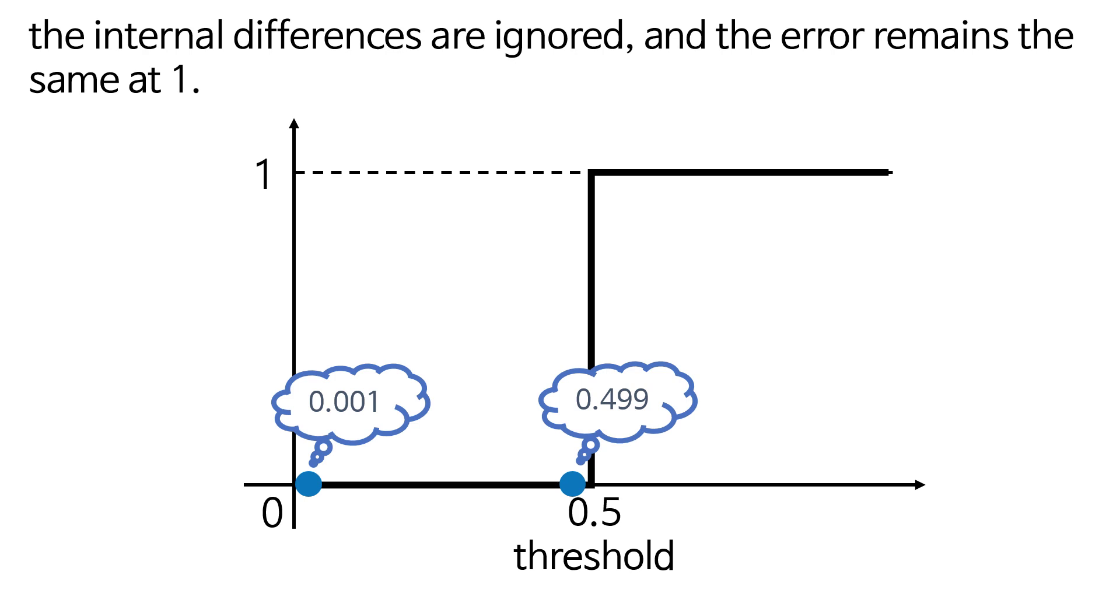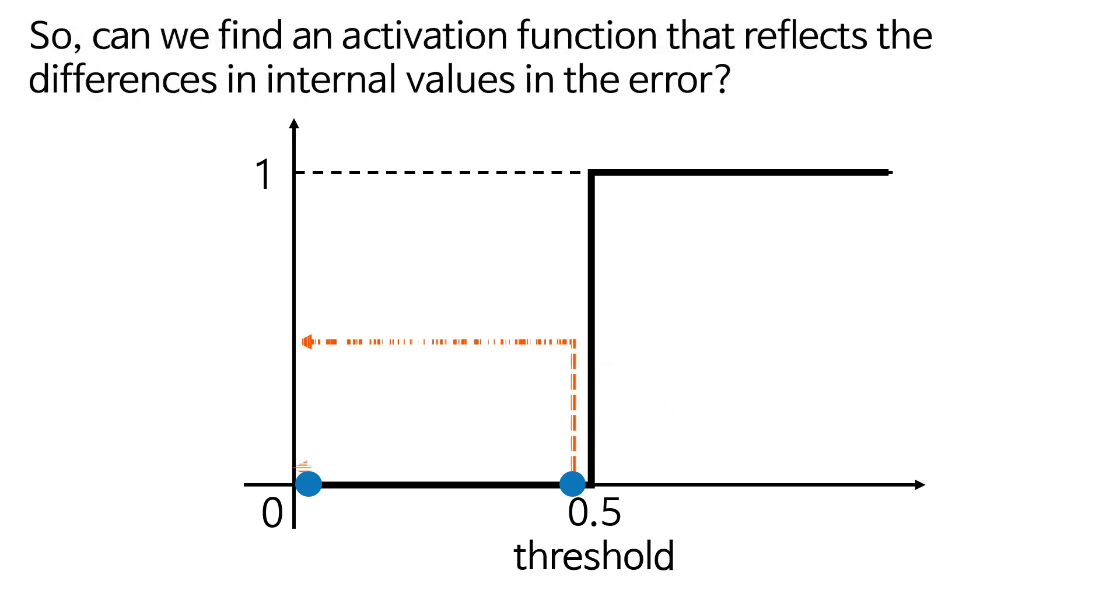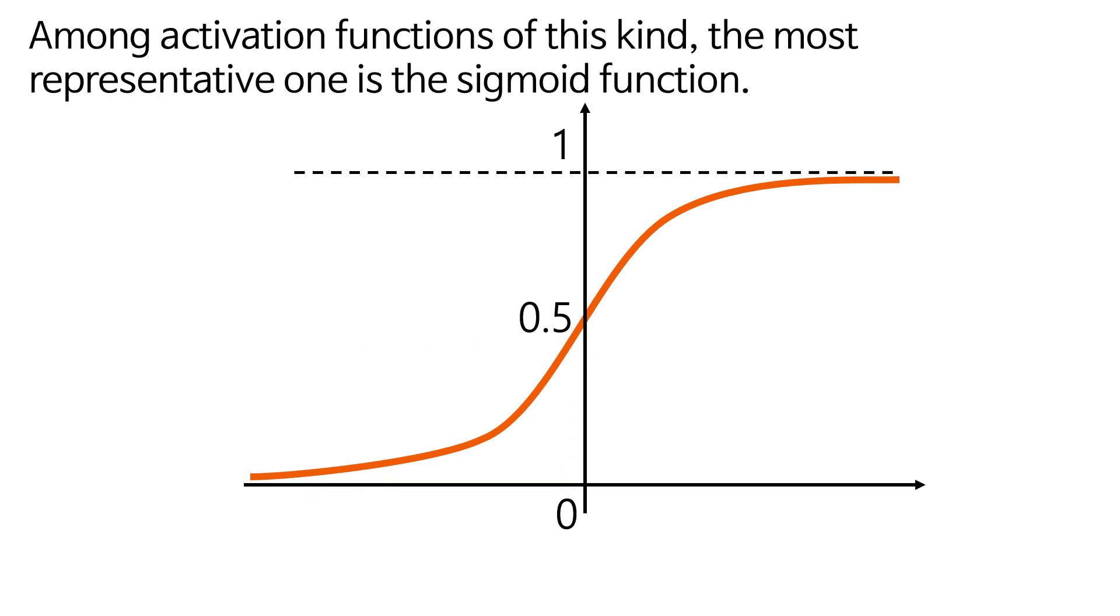From the perspective of 0.499, it's maddening. So can we find an activation function that reflects the differences in internal values in the error? This is why we need activation functions in the following form. Among activation functions of this kind, the most representative one is the sigmoid function.